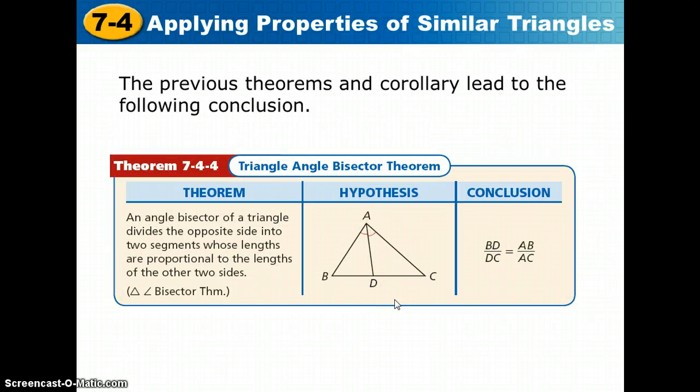Now, before we get onto the example using that previous theorem, we have one more theorem to talk about in the note packet. That is the triangle-angle bisector theorem. In this theorem, we are given an angle bisector of a triangle, AD, and told that it divides this opposite side into two segments whose lengths are proportional to the lengths of the other two sides of the triangle.